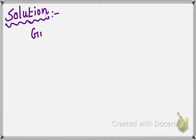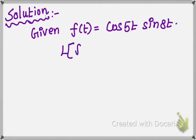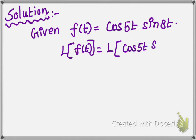Given f(t) equal to cos(5t)sin(8t). We take the Laplace transform on both sides, so L of f(t) equal to L of cos(5t)sin(8t).